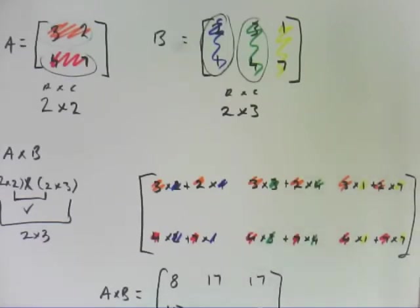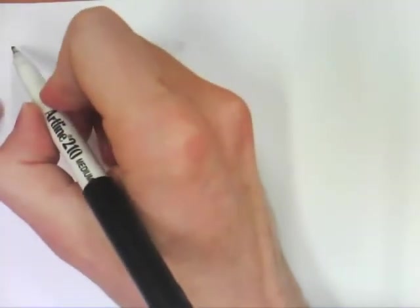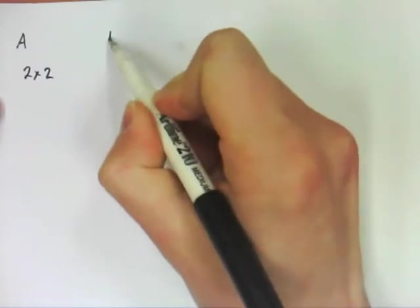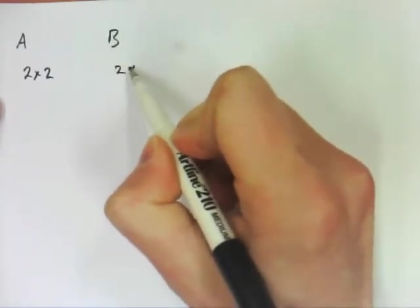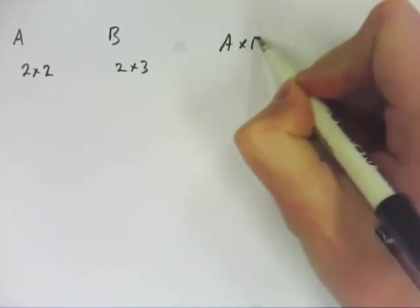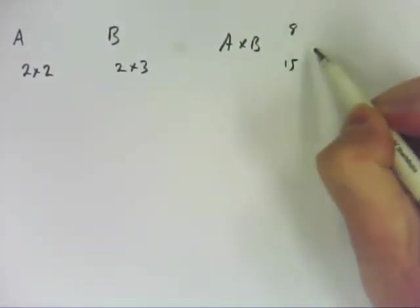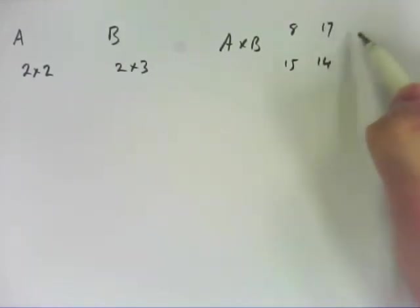Now there is something else I need to talk about and that is that while you can do A times B that doesn't necessarily mean you can do B times A. So remember A was a 2 by 2. B was a 2 by 3. And A times B came out at 8, 15, 17, 40, 17, 53.